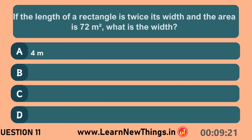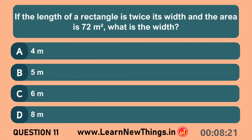If the length of a rectangle is twice its width and the area is 72 meters square, what is the width? 6 meters.